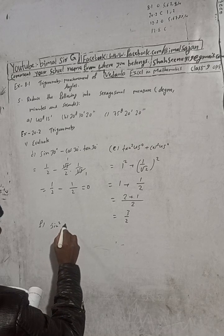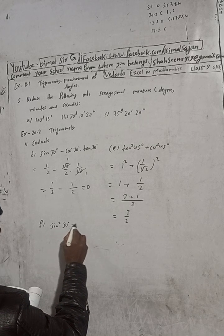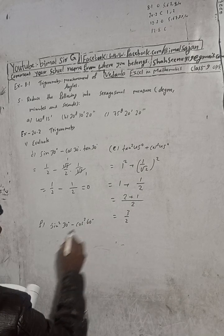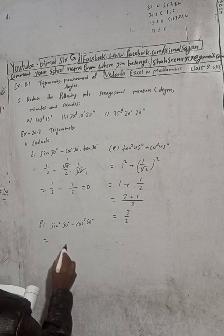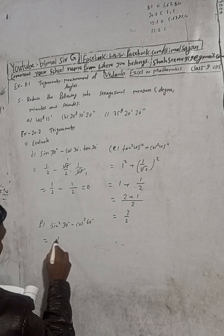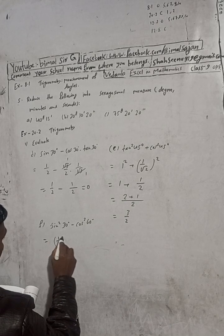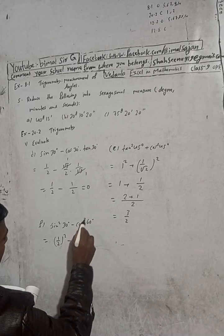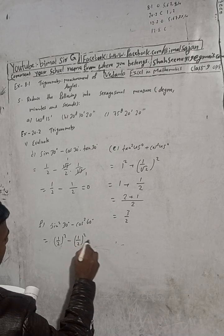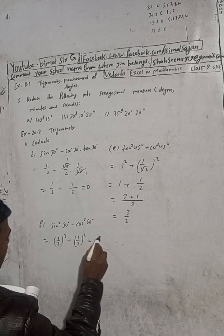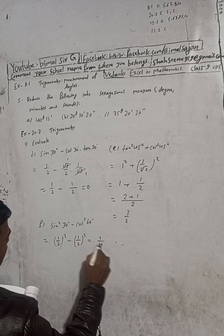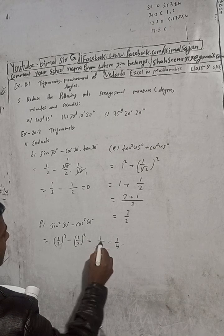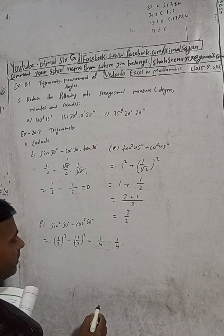sin squared 30 degrees minus cos squared 60 degrees is equal to — sin 30 is 1 by 2, so squared gives 1 by 4. Cos 60 value is 1 by 2, so squared is 1 by 4. Therefore 1 by 4 minus 1 by 4 equals 0.